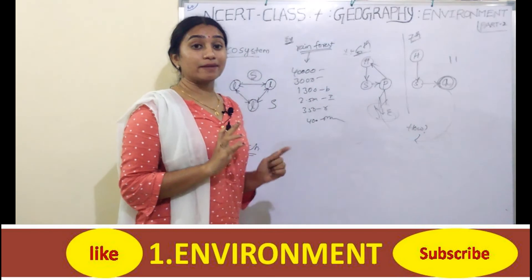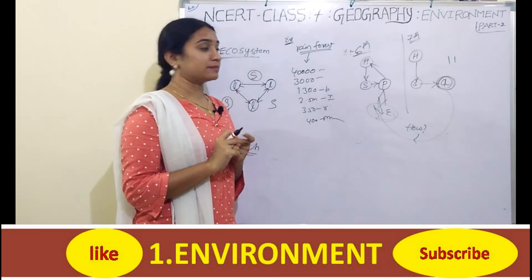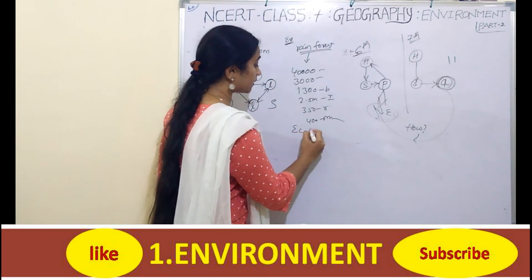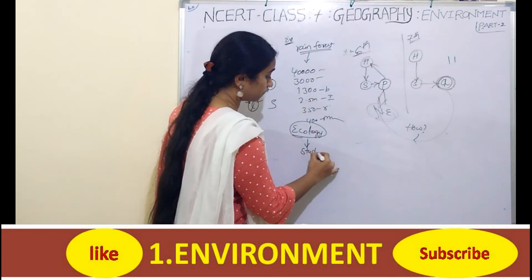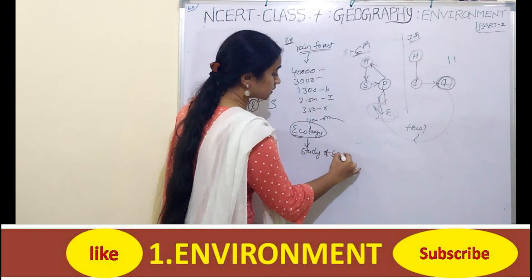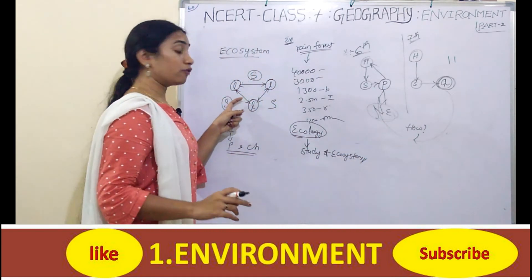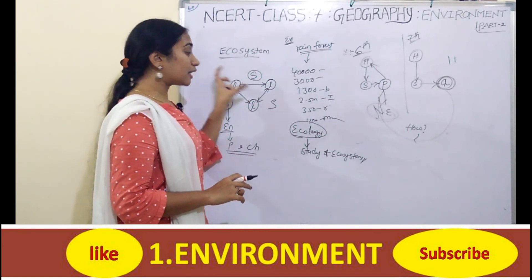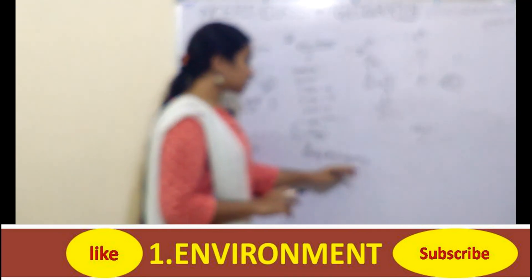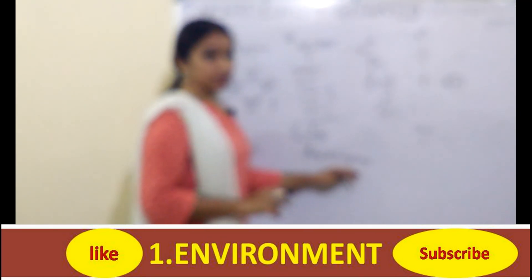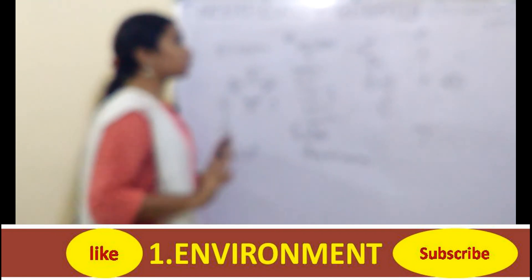The Amazon rainforest absorbs 2.5 million tons of CO2 per year - this is a great example of an ecosystem. Then, what is meant by ecology? The study of ecosystems is called ecology. Ecology is the study of a particular community - the interaction of living organisms within a particular area. Ecosystem is the sub-part of ecology. This concludes this chapter.